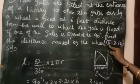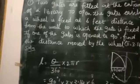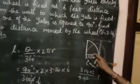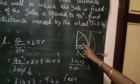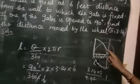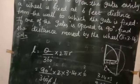Here given, pi equals 3.14. So this is the gate shape. This gate is fixed at 6 feet distance from the wall.